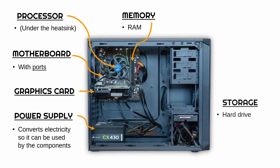The power supply is down in the bottom left in this particular case. There's also storage — in this example it's bottom right, but it could be anywhere on the computer. This is a hard drive, but it could be an SSD or an M.2 drive — there are other versions of storage. You might also have an optical drive at the top, which allows you to use CDs, DVDs, and other types of optical storage.